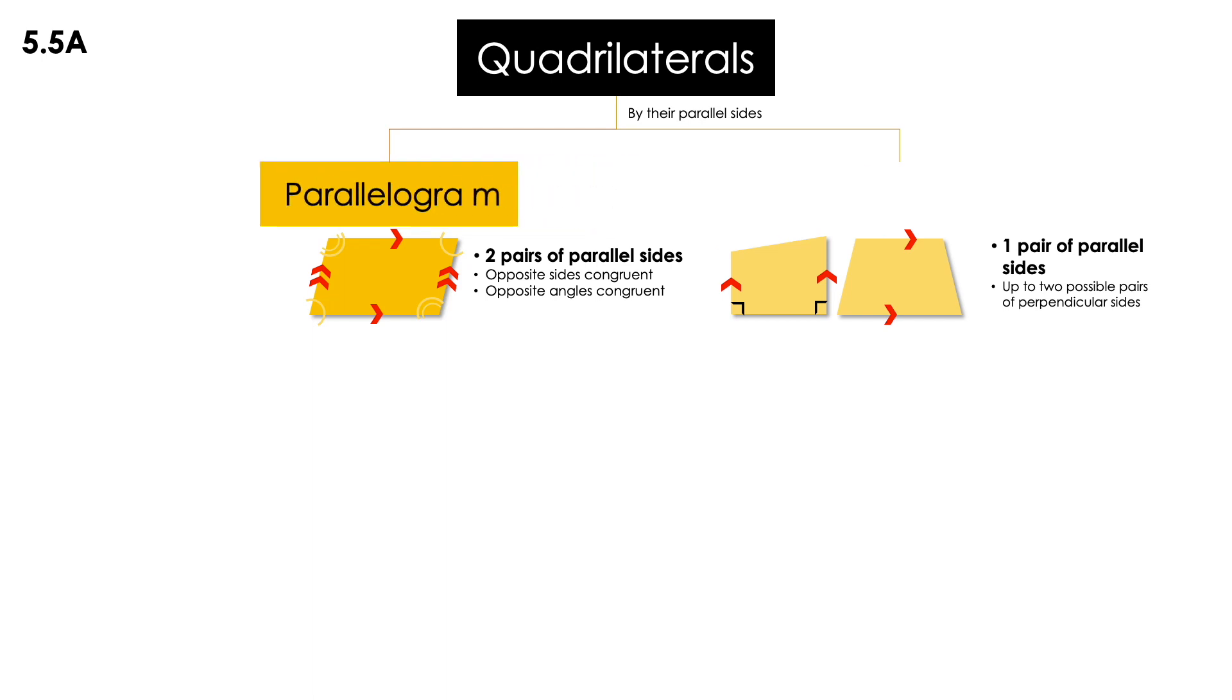The one on the left side, we're going to call it a parallelogram because it has two pairs of parallel sides. The one on the right side, we're going to call it a trapezoid. Also, the little one over there, we're going to call it a right trapezoid.